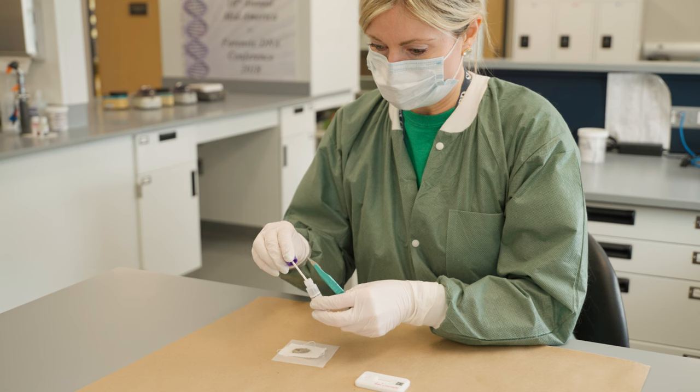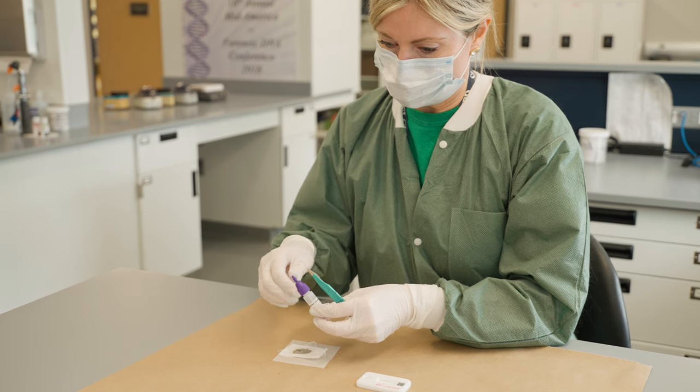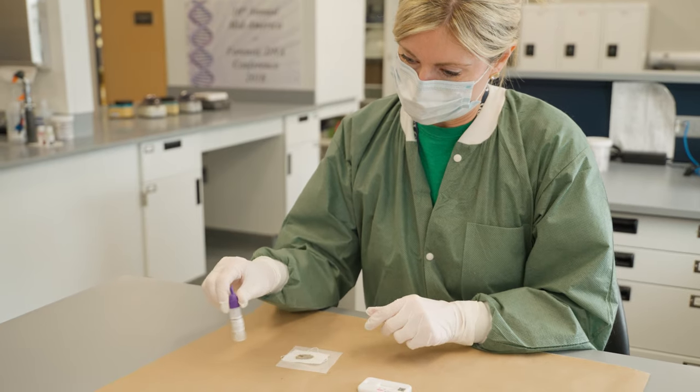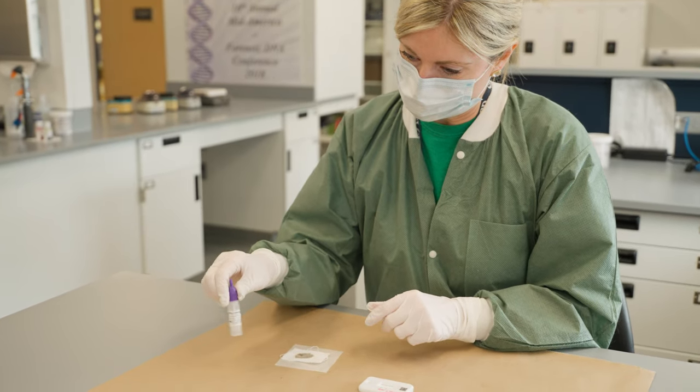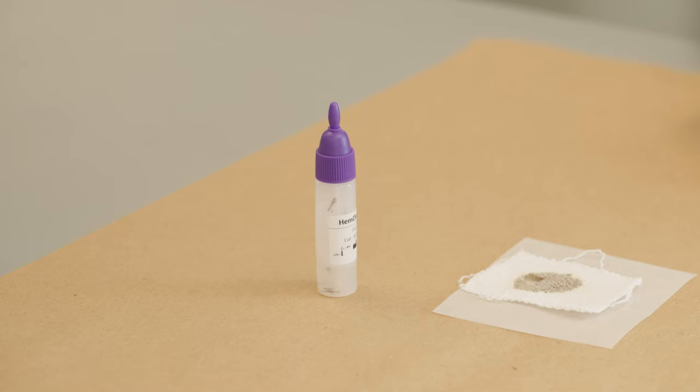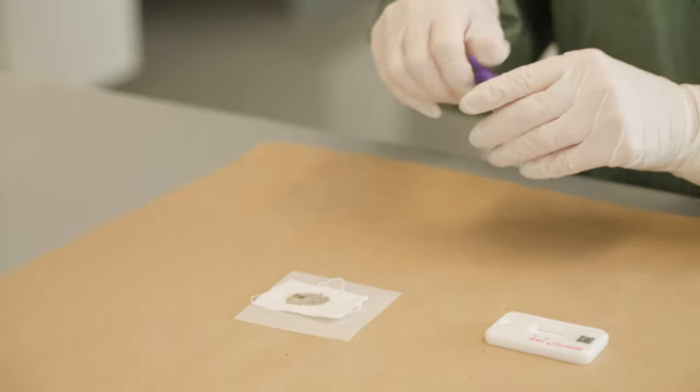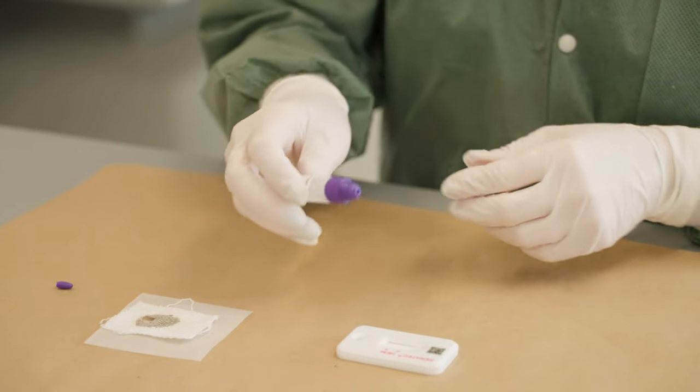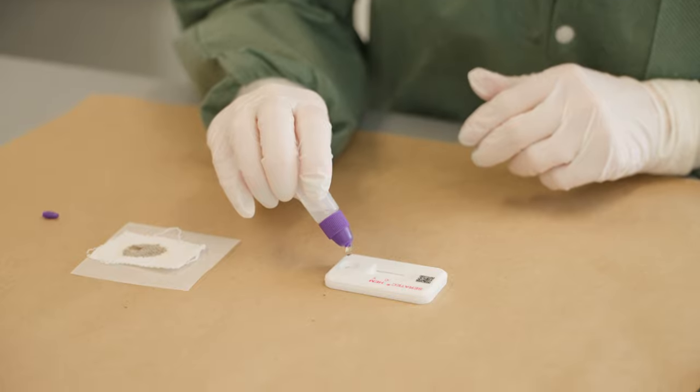This test is performed by cutting a very small portion of the sample to be tested. The sample is then added to the extraction buffer. The sample is vortexed and sits at room temperature for approximately 10 minutes. The tip is then snapped off of the top and several drops from the dropper of the extracted sample are added to the sample well of the testing device.